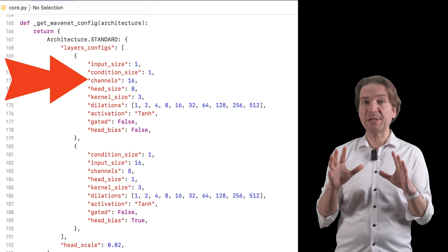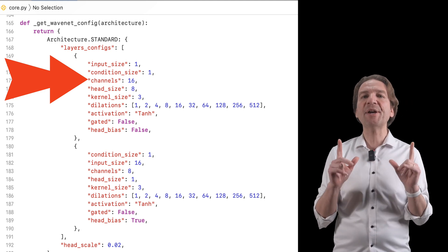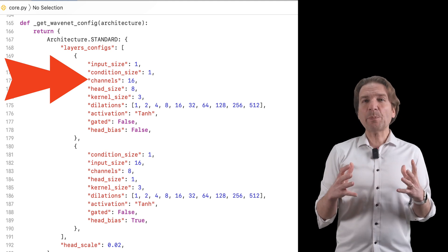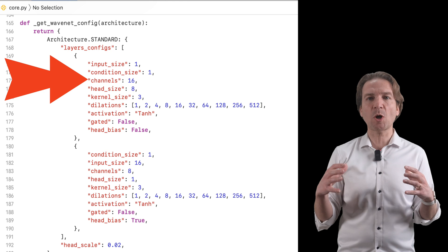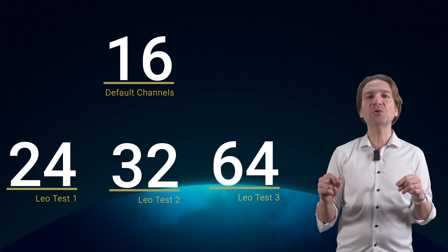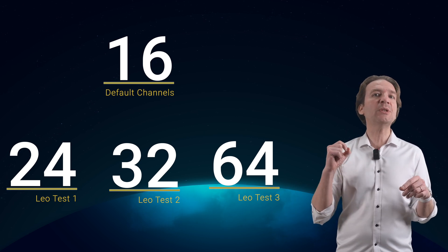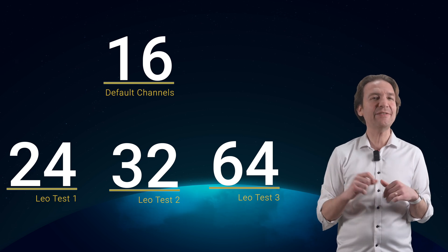Another important parameter of our neural network architecture is the number of channels. I see this parameter as a way to define how many different properties of the waveform we want to capture. By default it is set to 16 and I have tried to increase it to 24, to 32 and even 64.